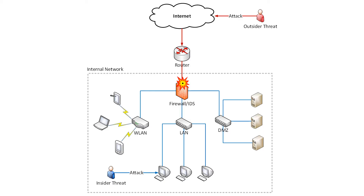Let's look at a typical network diagram where the internal network is in the dotted area. This environment is connected to the external world via a router and then the internet. If someone wants to attack from the outside, they have to go through the internet layer, through the router, and after that they will be greeted by a firewall or intrusion detection system, and only if they break through that would they reach the internal systems.